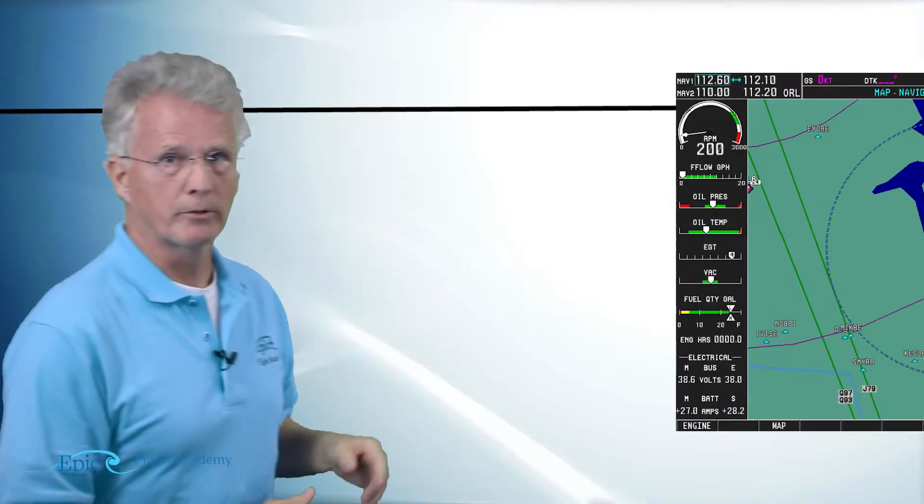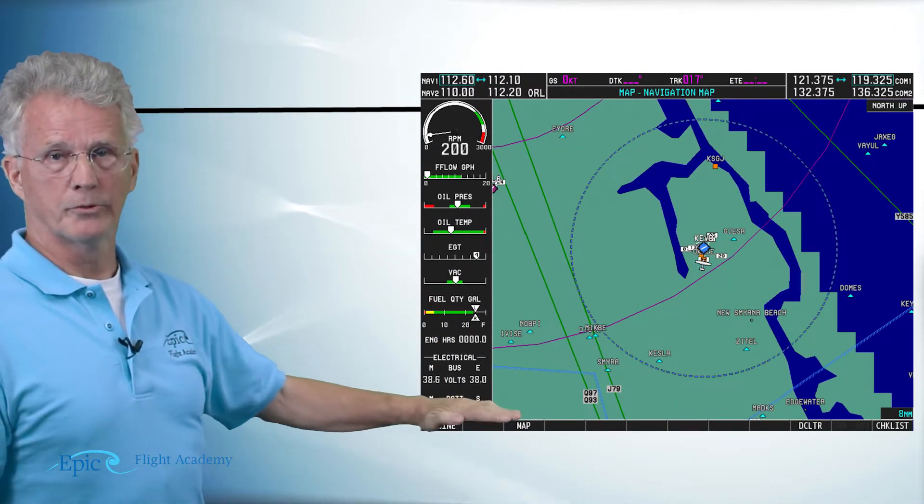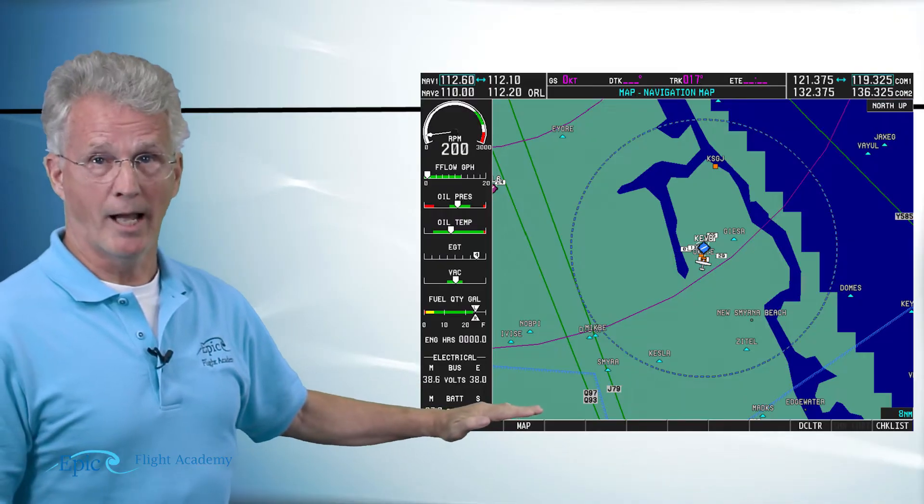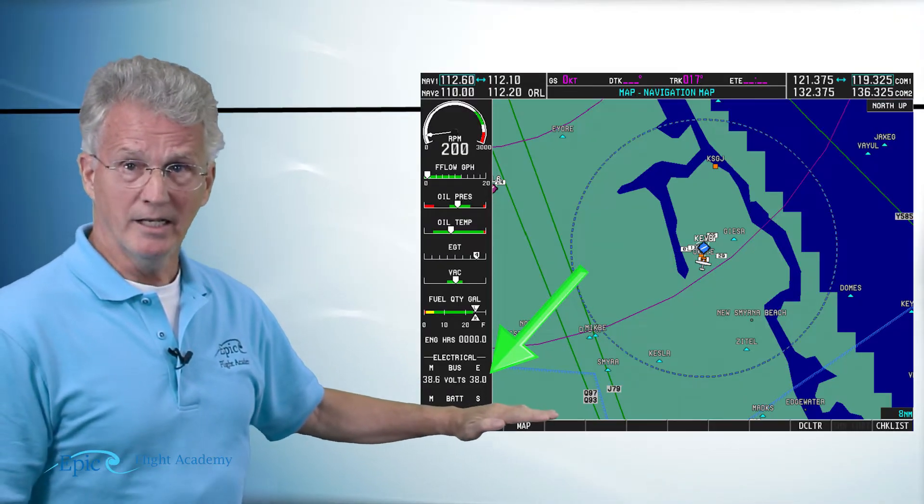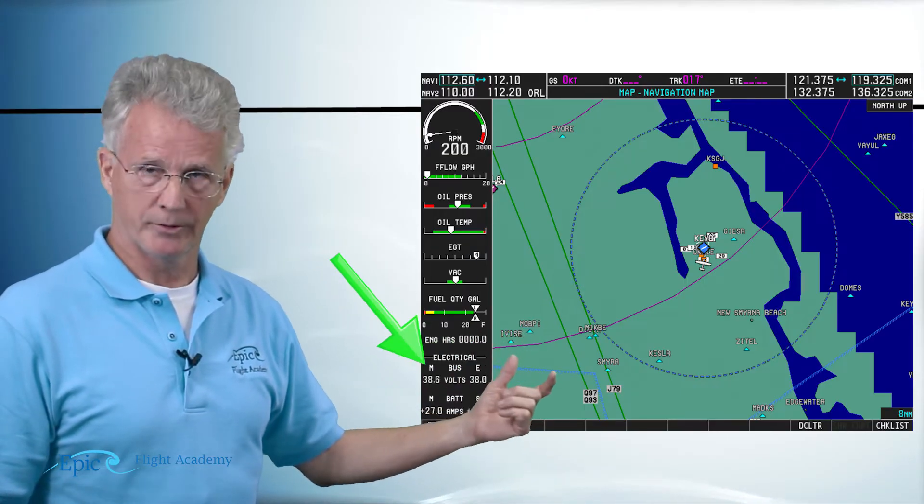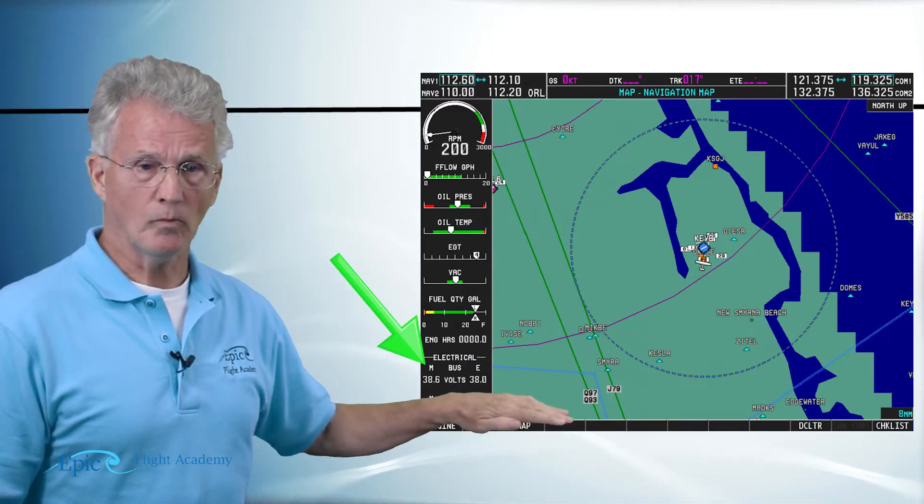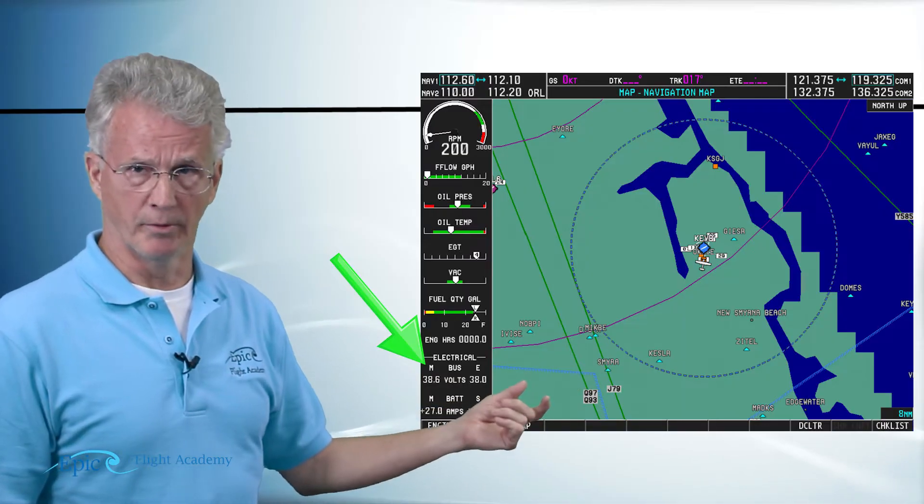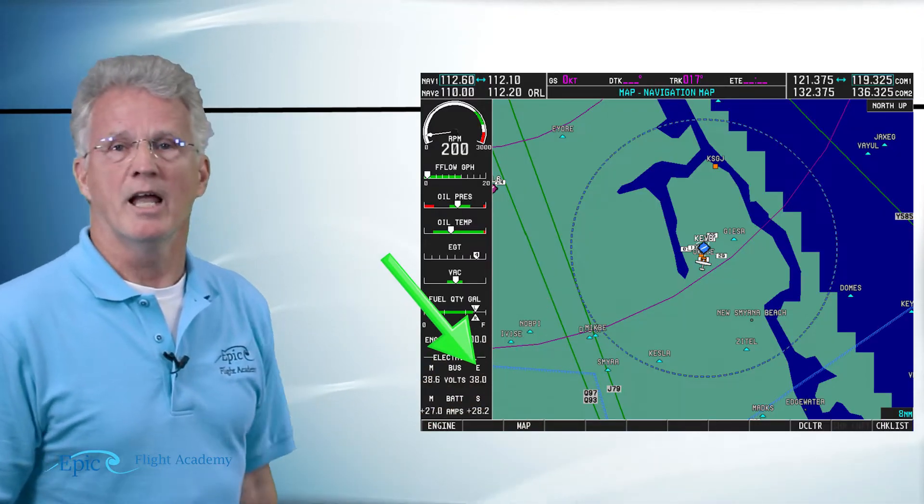Those are the two primary ampere indicators that we see in airplanes until we started to see glass cockpits and the MFD on the 172 S model. On the left-hand side of your MFD, your multifunction display, you're going to see this vertical column. This vertical column shows electrical energy at the bottom, and it's showing a specific number. It'll say M bus and there's a number, or S bus and there's a number.